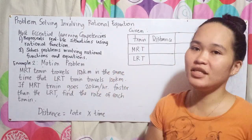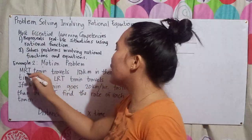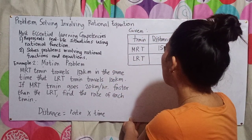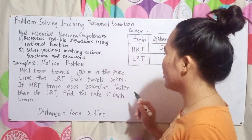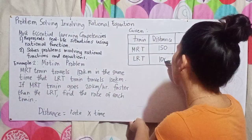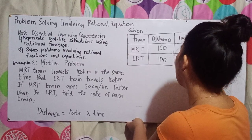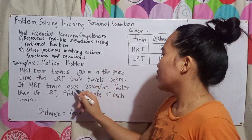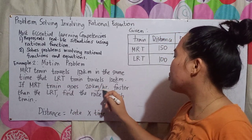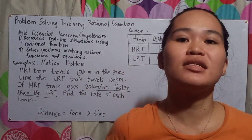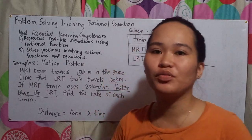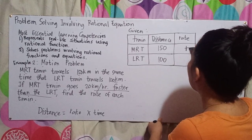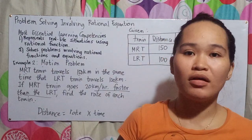Since distance is given, let's identify: MRT traveled 150 km, so distance is 150. LRT traveled 100 km, so distance is 100. Next, for rate: MRT goes 20 km per hour faster than LRT — so MRT's rate is plus 20 compared to LRT.